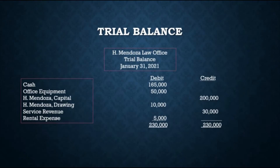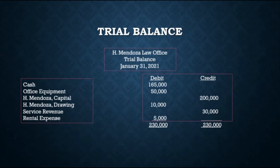List the accounts with their corresponding balances, arranged in the same order as the ledger. Write each balance in either the debit or credit column of the trial balance according to its normal balance. Then add the debit and credit columns, and draw a double line under the totals of both columns.